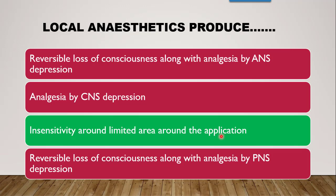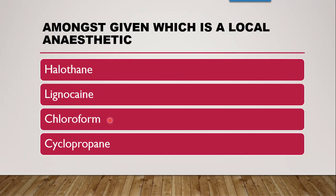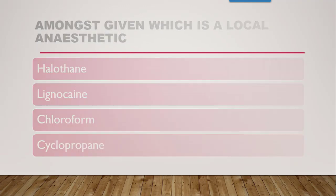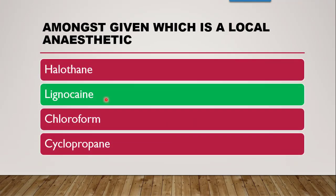Next question: amongst the given options, which is a local anaesthetic? The options are halothane, lignocaine, chloroform, and cyclopropane. Halothane, chloroform, and cyclopropane are all general anaesthetics. So the correct answer is lignocaine, which is a local anaesthetic.